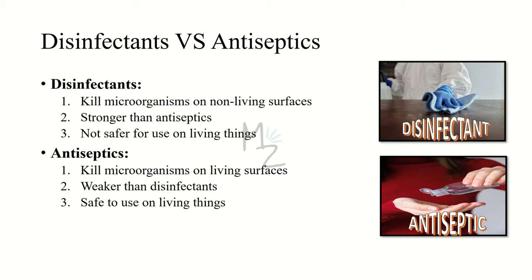Disinfectants and antiseptics both kill microorganisms, but the key difference is: disinfectants kill microorganisms on non-living surfaces like a table, while antiseptics kill microorganisms on living surfaces like skin. Disinfectants are stronger than antiseptics — for example, a detergent is stronger than a hand sanitizer. Disinfectants are not safe for use on living things, whereas antiseptics are safe to use on living tissues.